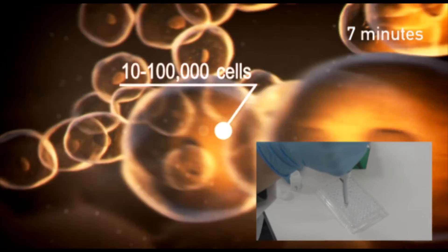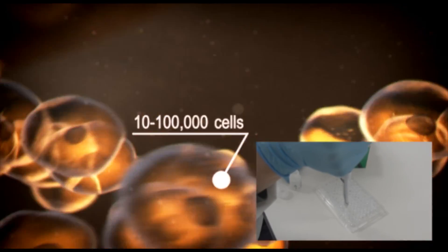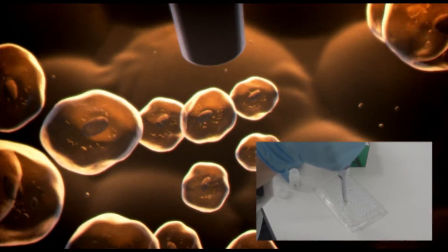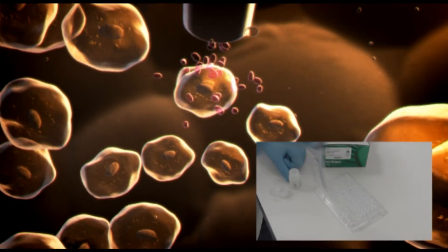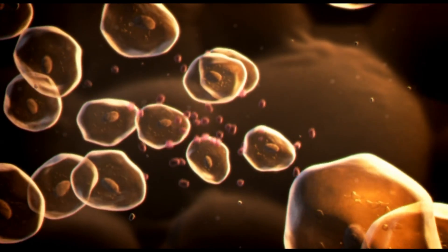First, 10,000 to 100,000 cultured cells are washed with phosphate-buffered saline. They are then mixed with lysis solution and incubated at room temperature for 5 minutes.